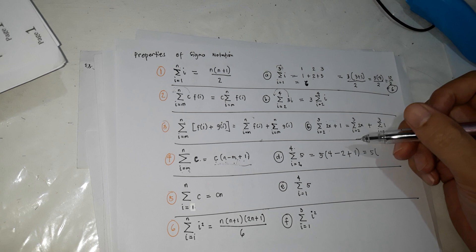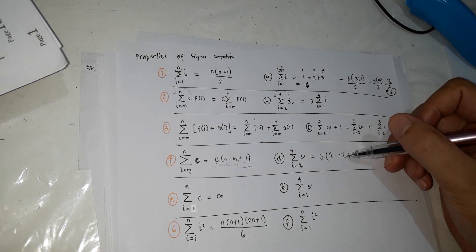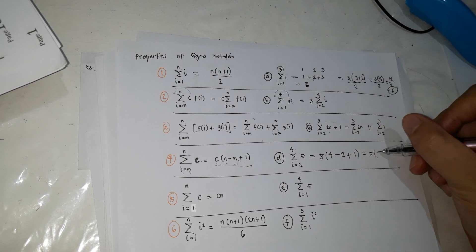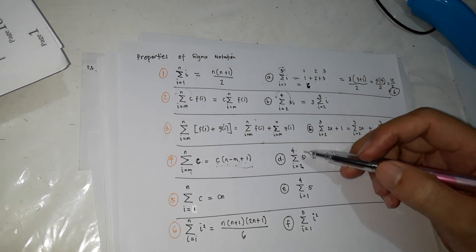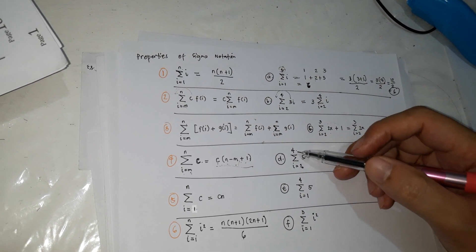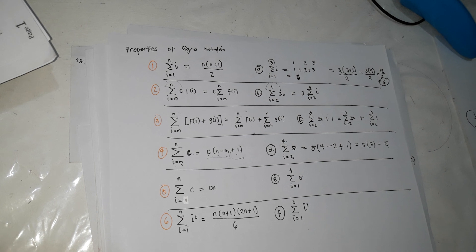So 5, we'll let us solve, 4 minus 2, 2, plus 1, 3. So the answer is 15. So summation of 5 from 2 to 4, the answer is 15.